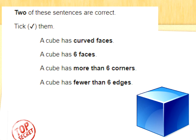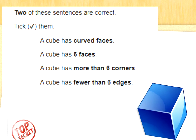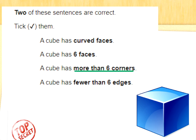Two of these sentences are correct — tick them. A cube has curved faces. A cube has six faces. A cube has more than six corners. A cube has fewer than six edges. A cube has six faces — tick that straight away. Twelve straight edges and eight vertices — eight corners, if you please. So eight is more than six. And I knew not to look at 'a cube has curved faces' because a cube is made up of straight lines and squares. Well done.